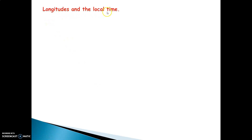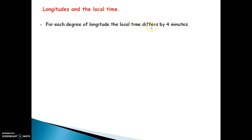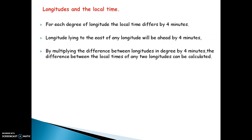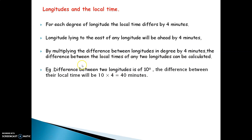Longitudes and local time: for each degree of longitude, the local time differs by four minutes. Various longitudes are there on the earth and the difference between them is four minutes. Longitudes lying to the east of any longitude will be ahead by four minutes. By multiplying the difference between longitudes in degrees by four minutes, the difference between the local time of any two longitudes can be calculated.